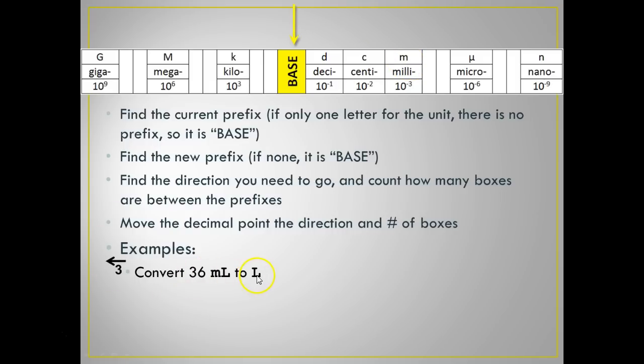So, on your paper, I want you to write, convert 36 milliliters to liters. I want you to write three with a left arrow over it. This means the decimal point, which is there. It's at the end of that six. It's invisible. You don't write a decimal if you don't need it. I'm going to move that one, two, three to the right, and any place that I need to, I'm going to fill in with a zero. So, that becomes 0.036 liters. Let's try another.